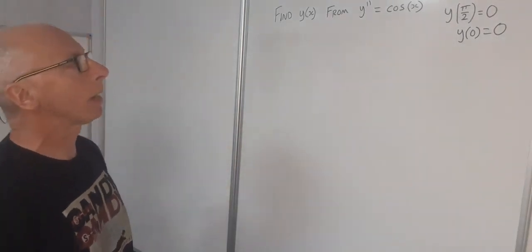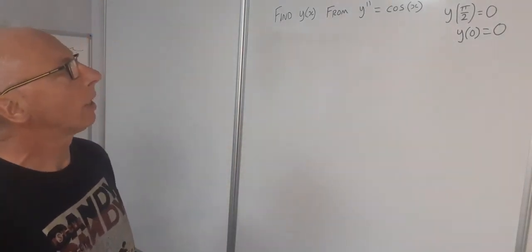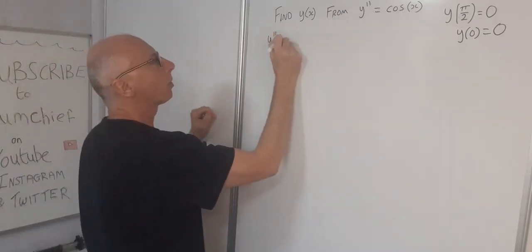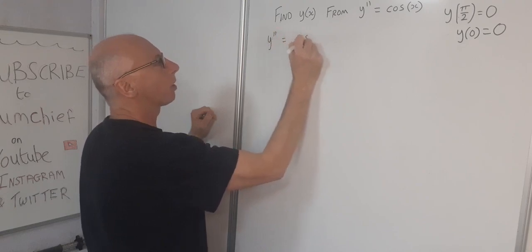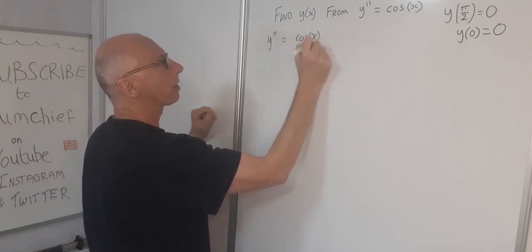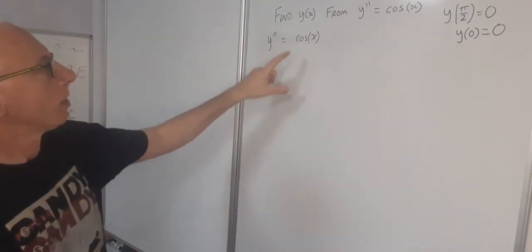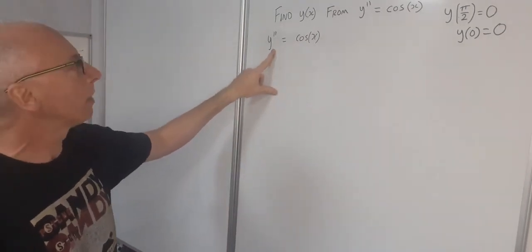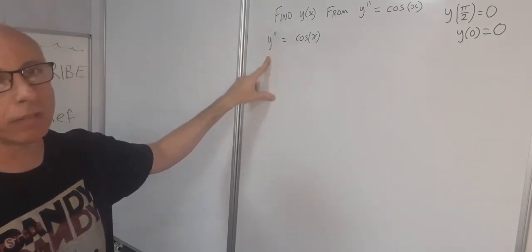So how are we going about solving this? Let's just bring this equation down here. So y double prime equals cosine of x. x is our independent variable and y is dependent on x, so y is the dependent variable.